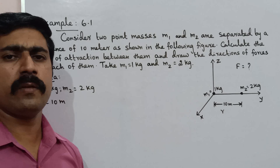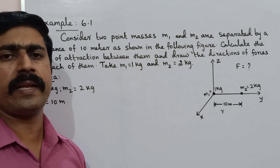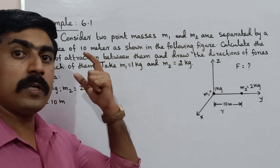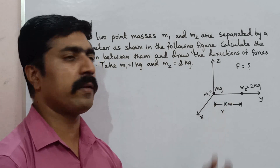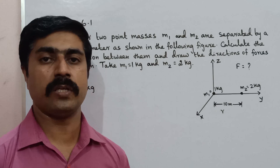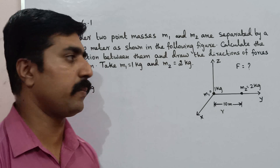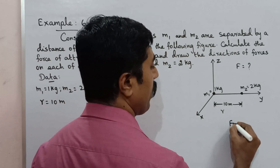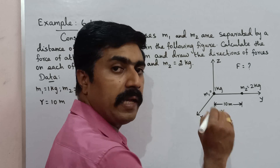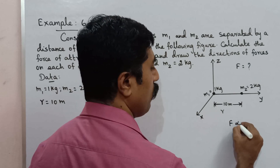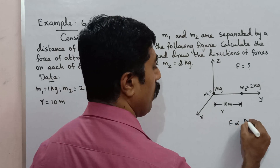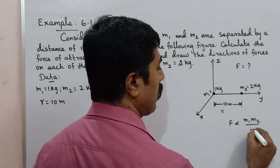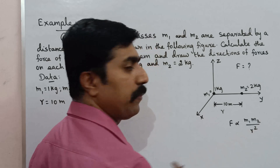Force of attraction — we will say force of attraction between two mass bodies, two point masses — gravitational force. What is the formula? F is directly proportional to M1 times M2 divided by r squared.